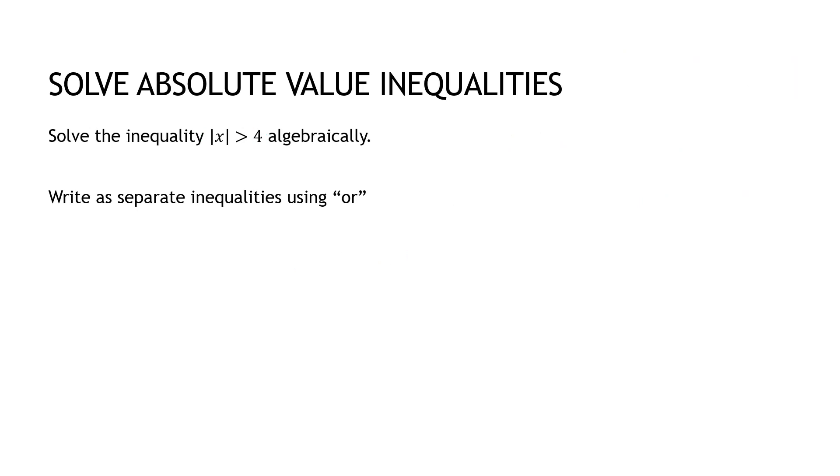Whereas this is a great or. So whenever we have a greater than, once again, once that absolute value's by itself, it's an or. So I'm going to say x is greater than four or x is less than negative four. So I'm still writing it twice. The first time I write it just as it looks. The second time I write it with the opposite sign and the opposite direction, both. So this is how I would write it using or.